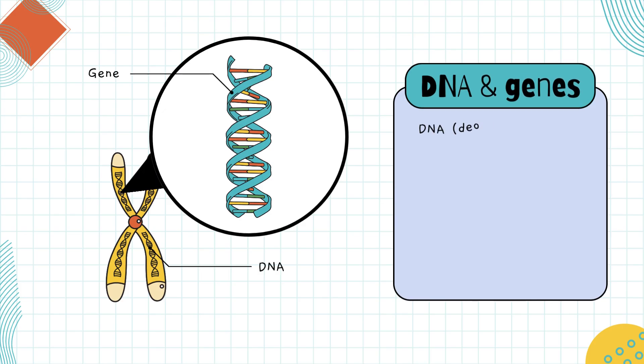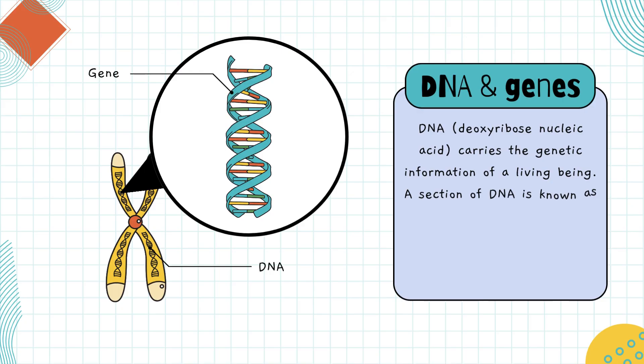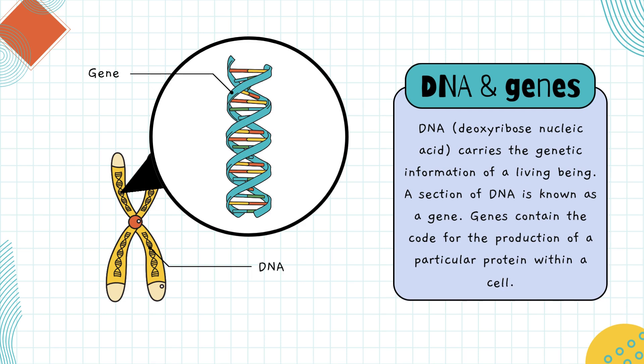Inside each chromosome is a molecule called DNA, short for deoxyribonucleic acid. It's the instruction manual for life. Within this DNA, specific sections are called genes. Think of genes as sentences in that manual, each one giving the code to make a particular protein. And proteins? They're the workers of the cell — building structures, sending signals, and keeping everything running smoothly. So, from chromosomes to DNA, to genes and proteins, it's a chain of command that makes life possible.